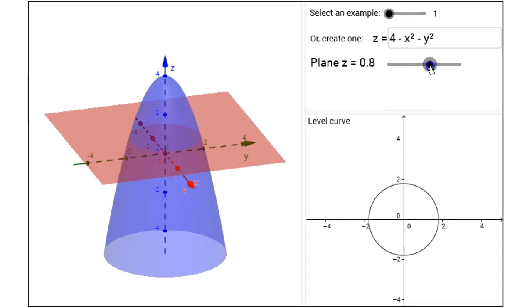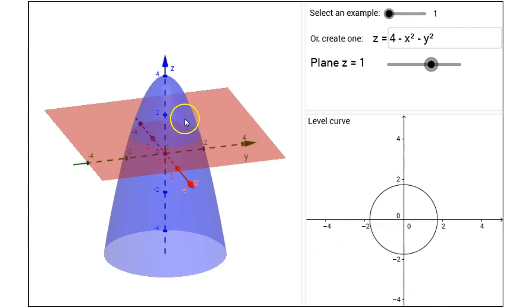Let me set z to say 1 for example. The level curve is a set of points in the xy plane. It's not a set of points in space. A level curve is a set of points in the xy plane that satisfy f of xy equals c for some constant c.